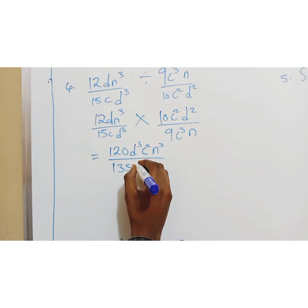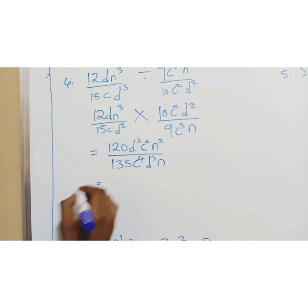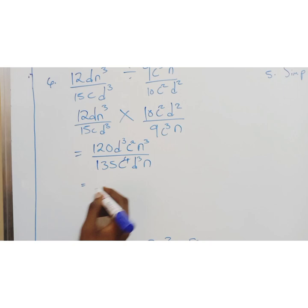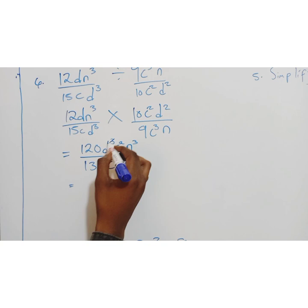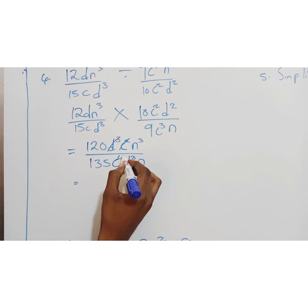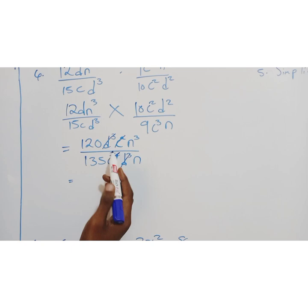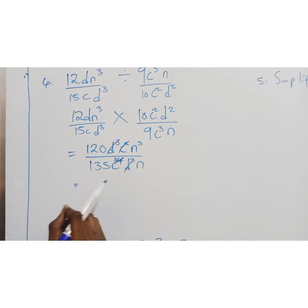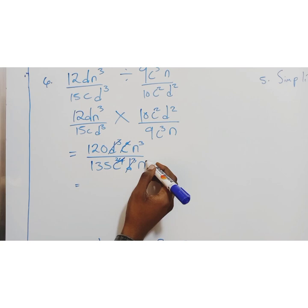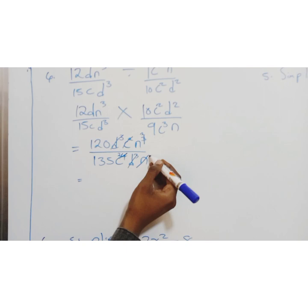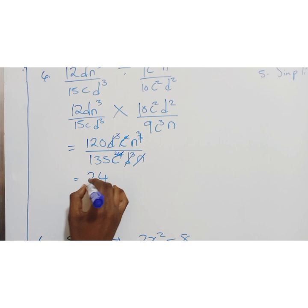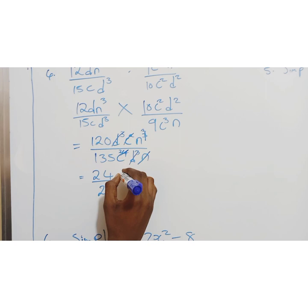What do I have here? 15 times 9. That will give us 135. I have c times c to the power 3. This is c to the power 4. Then I have d to the power 3. Then I have n. Once I have this, I look for what's common. Let me start with the letters first. So this is d3. d3 will cancel d3. They cancel. This is c squared. Here there are 4. So 4 minus 2 will give you 2 here. When you're dividing, you subtract the powers. So this was c squared and this was c to the power 4. I have subtracted the powers. So 4 minus 2 is 2.